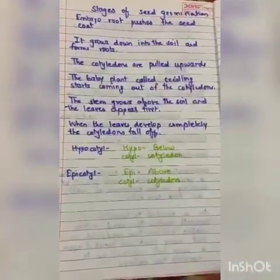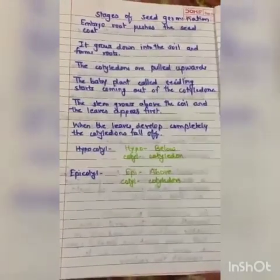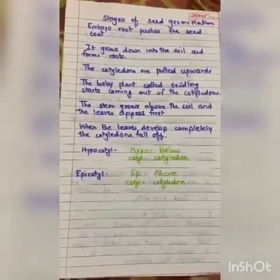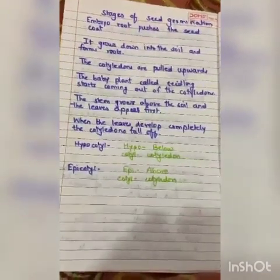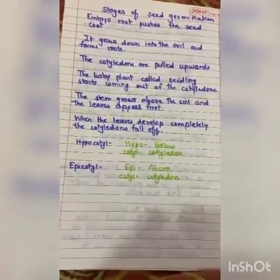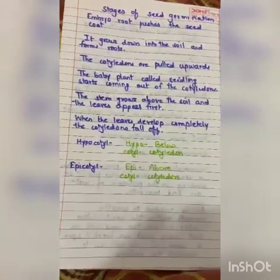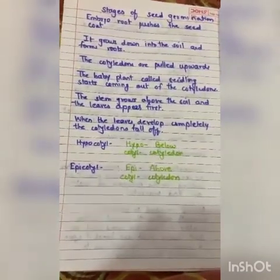Next we have seen the different stages of seed germination: the embryo root pushes the seed coat and grows down into the soil to form roots; the cotyledons are pulled upwards; the baby plant called the seedling starts coming out of the cotyledons; the stem grows above the soil and leaves appear first; when the leaves develop completely, the cotyledons fall off and the process of germination is completed.